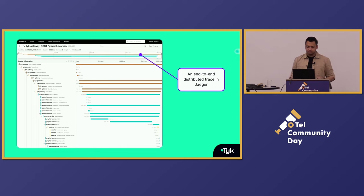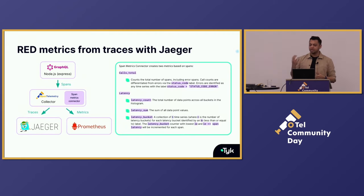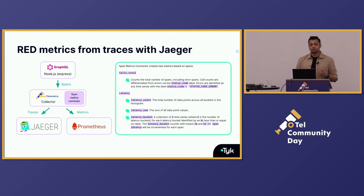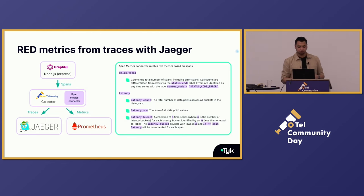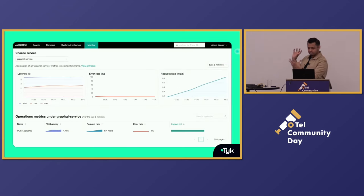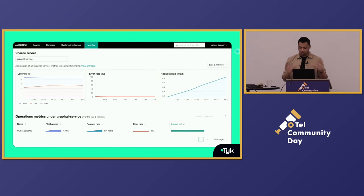Now that we've got the setup done, let's move forward into getting the RED metrics integrated. Jaeger already has some out-of-the-box integrations available. It uses a component in the OTel Collector called the Span Metrics Connector to generate metrics based on the spans. The Span Metrics Connector creates two metrics: calls total and latency count. Those metrics are stored in Prometheus, and Jaeger connects to Prometheus to display them. You can now see the request rate, error rate, and duration for your GraphQL service in the monitor tab dashboard.